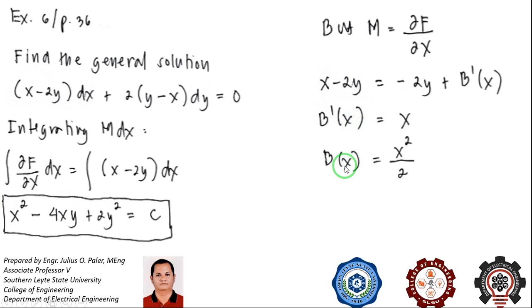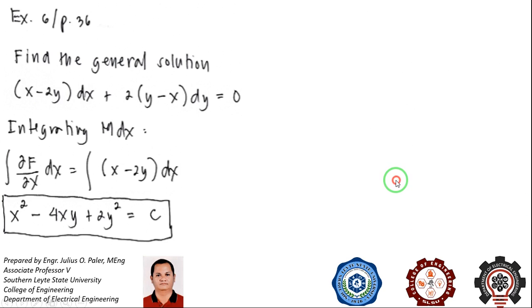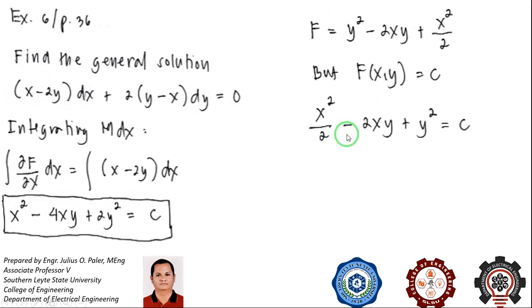Substituting B of X to our F here, so our F will now be Y squared minus 2XY plus X squared all over 2. But again, F is equal to C, so rewriting this one, equate it to C and simplify by multiplying both sides by 2.